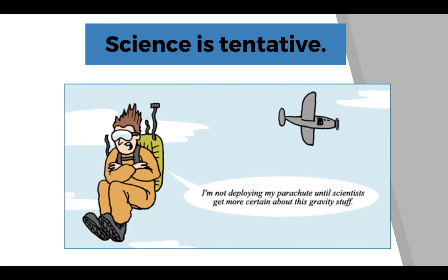We say science is tentative because it's ever changing, it's ever growing, it's ever evolving. And as we gather more evidence, we really are strengthening our ideas. Even if we're saying, oh, that didn't work, we're ruling out the possibilities of the wrong and filling it in with a better explanation using what we have as evidence at the time. So here's a funny joke for you. It says, I'm not deploying my parachute until scientists get more certain about this gravity stuff. So gravity is a theory, which means that it's our best explanation at the time. And with all of our evidence, we know what happens if this guy doesn't pull his parachute.